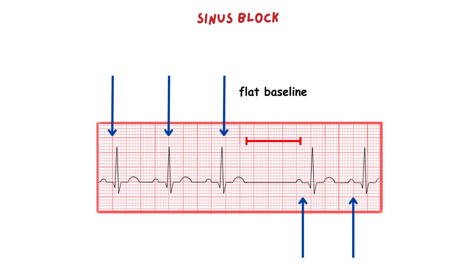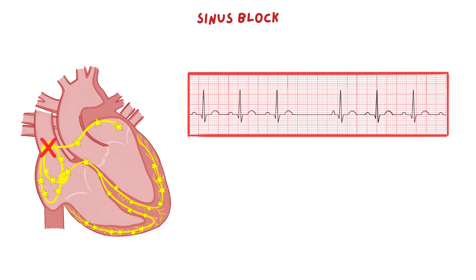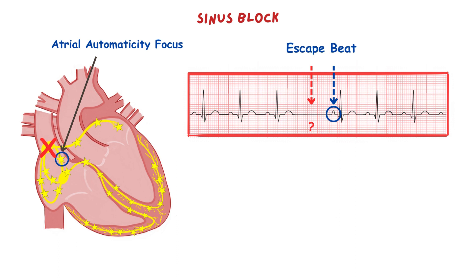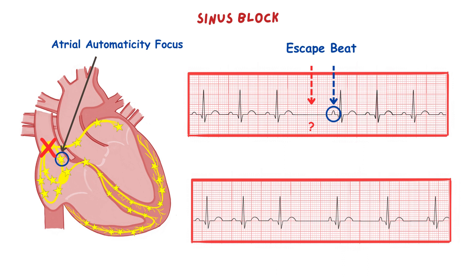As we learned previously, in a situation when this pause takes longer, an atrial automaticity focus may wake up to fire a beat, which in that case represents an escape beat. And if there is a complete and definite block in the SA node, we expect an atrial focus to wake up and become dominant, which in this case represents an escape rhythm. You will distinguish these conditions by the different morphology of the P wave. I will link the video in the right upper corner where I explain these conditions in detail.